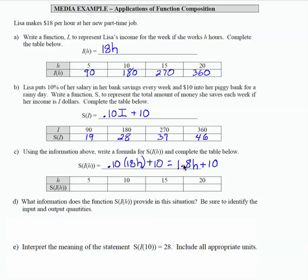And so if we compute the values for the table here, when input is 5 in this function, output is 19. Notice we are going to end up getting the same results that we did up here. When input is 10, output is 28. When input is 15, output is 37.